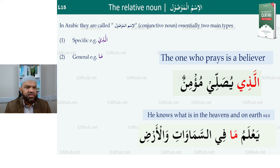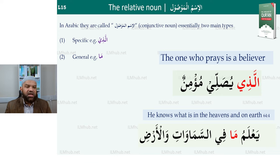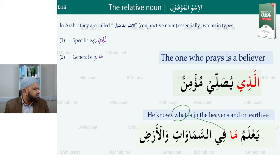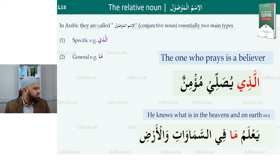Two examples: 'The one who prays is a believer' — alladhi yusalli mu'minun — where yusalli is the verb. 'He knows what is in the heavens and the earth' — this is a Quranic example. Ya'lamu means he knows, and 'ma' here is your relative noun meaning 'whatever.' Ya'lamu ma fi al-samawati — 'bi' is a harf of jar, 'samawat' is the plural meaning heavens. Wal-ardi — so he knows whatever is in the heavens and the earth. 'Ma' is here being used as a relative noun.